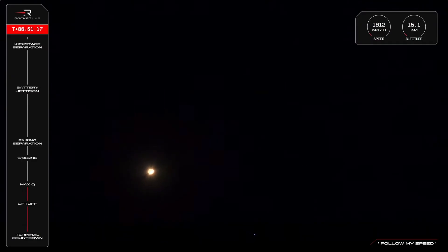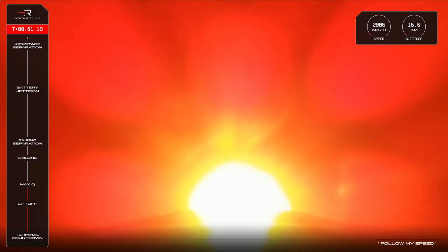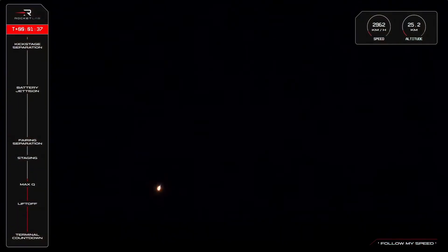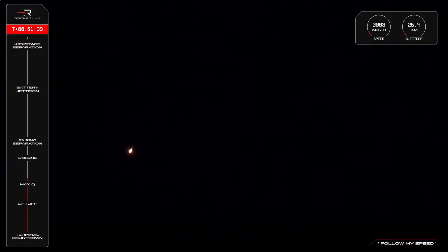HVB discharge nominal. And that was the call out for Max Q. So Electron is performing nominally during this first stage burn as the atmosphere thinned and we continue to climb. The rocket's velocity is now approaching 2,800 kilometers an hour and we're coming up on several milestones in quick succession